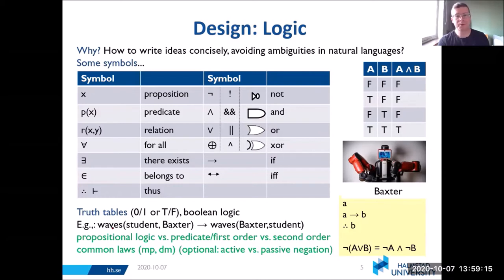So an example of a logical statement can look like this: if a student waves at Baxter, then Baxter waves to a student. Baxter is one of the robots that I use a lot. You'll notice in this chart that we have propositions and predicates, which is important because this comes about in different kinds of logic.